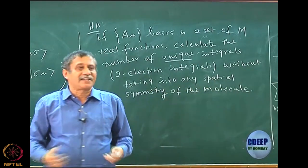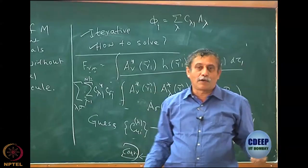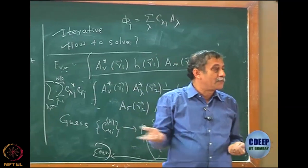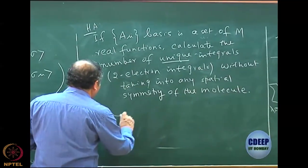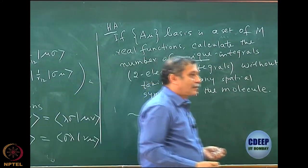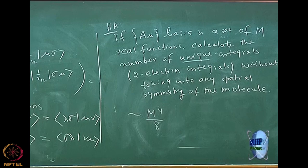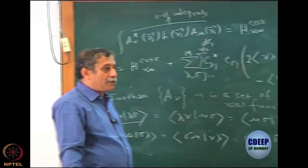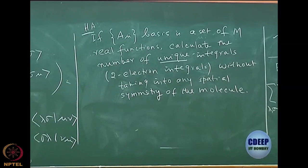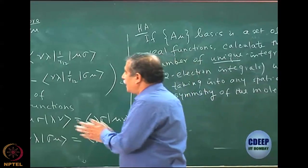You can assume the molecule has no other symmetry — it is A1. Many of you have done group theory: A1 symmetry means no further symmetry is there, the point group is A1. Of course if there is further symmetry it will reduce even more, but do not assume that. From my discussion you can make out the hint that it should be something to do with m^4/8, but it is not exactly that, because only the cases where all four indices are uniquely different are divided by 8. So what is the actual number? Calculate the total number of unique integrals — that will really help.